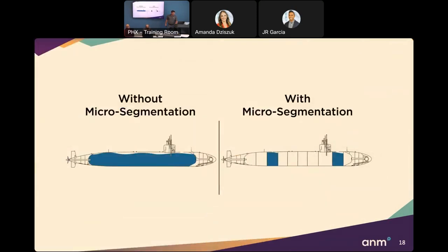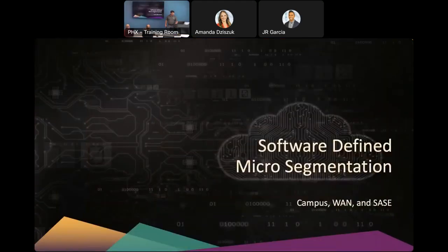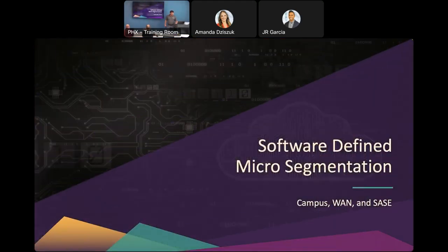Think of it like a submarine and failure domains. Without micro-segmentation, you poke one hole and the entire thing goes down. With micro-segmentation, you poke a hole and you maybe lose one compartment of the sub. The general idea is we're trying to create failure domains and silos to limit damage.